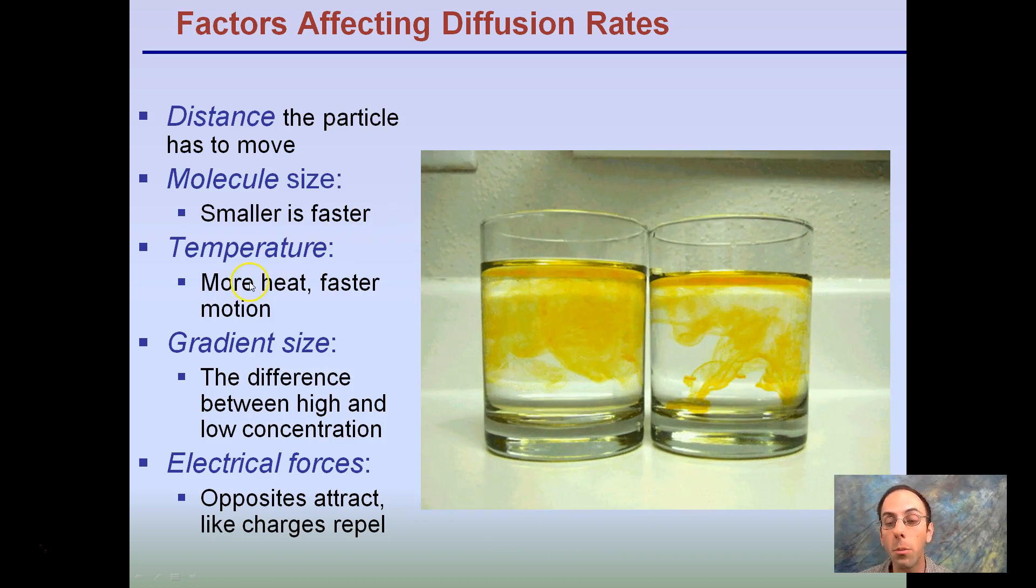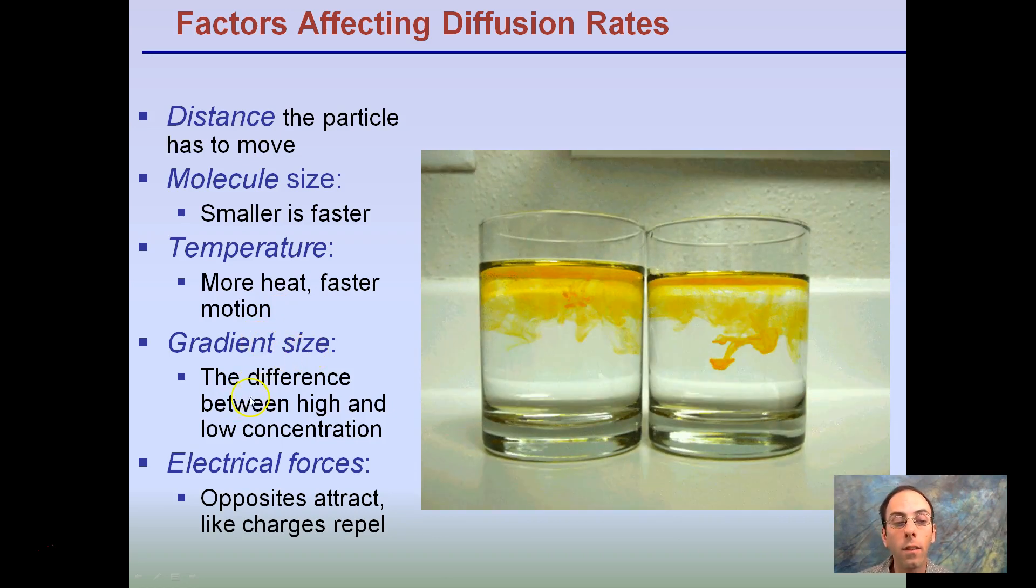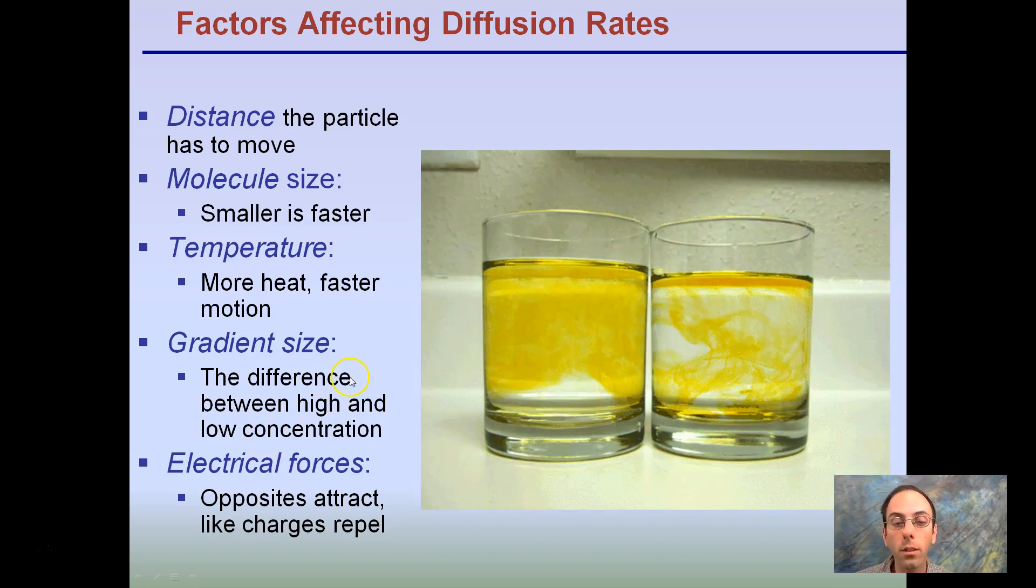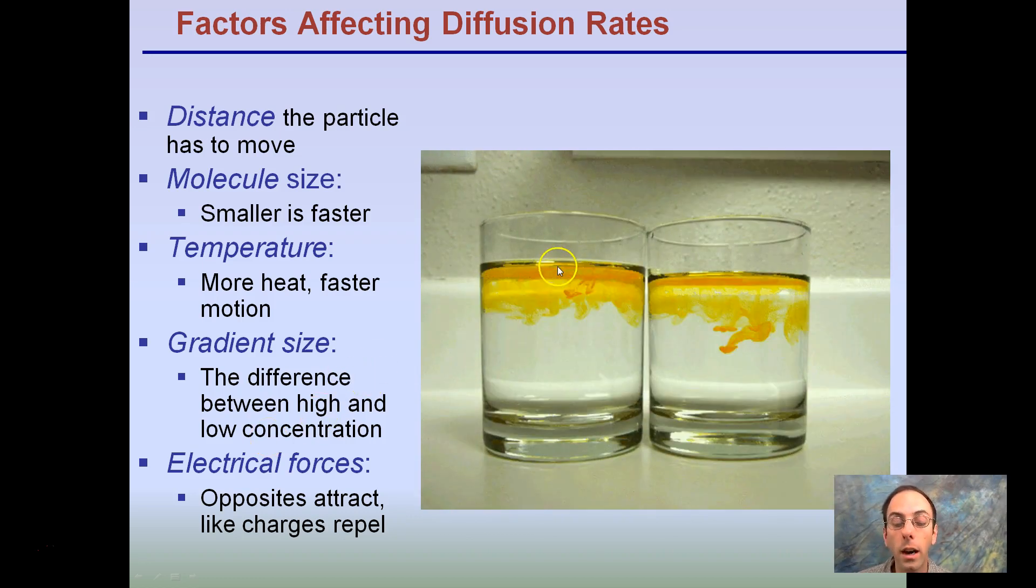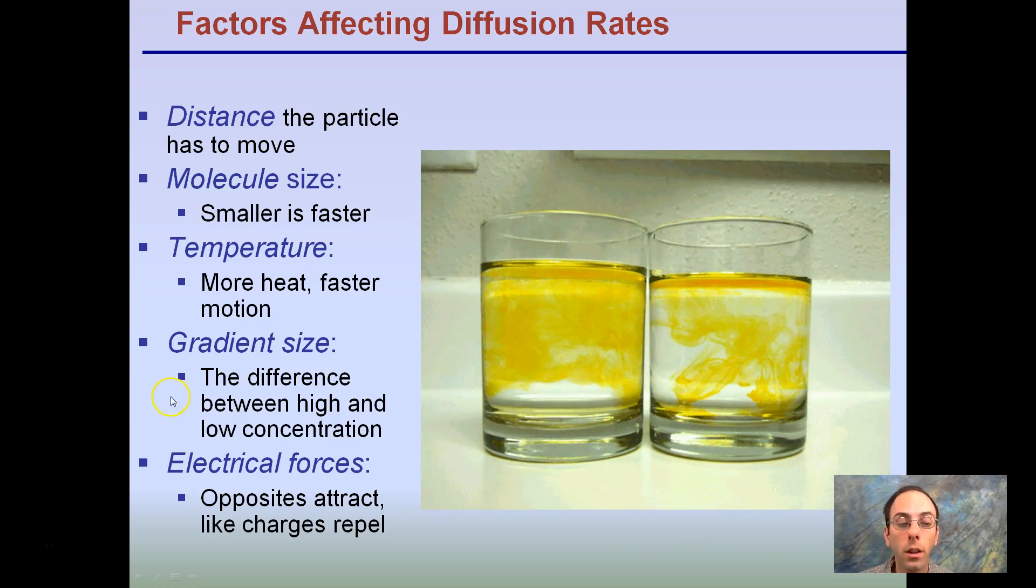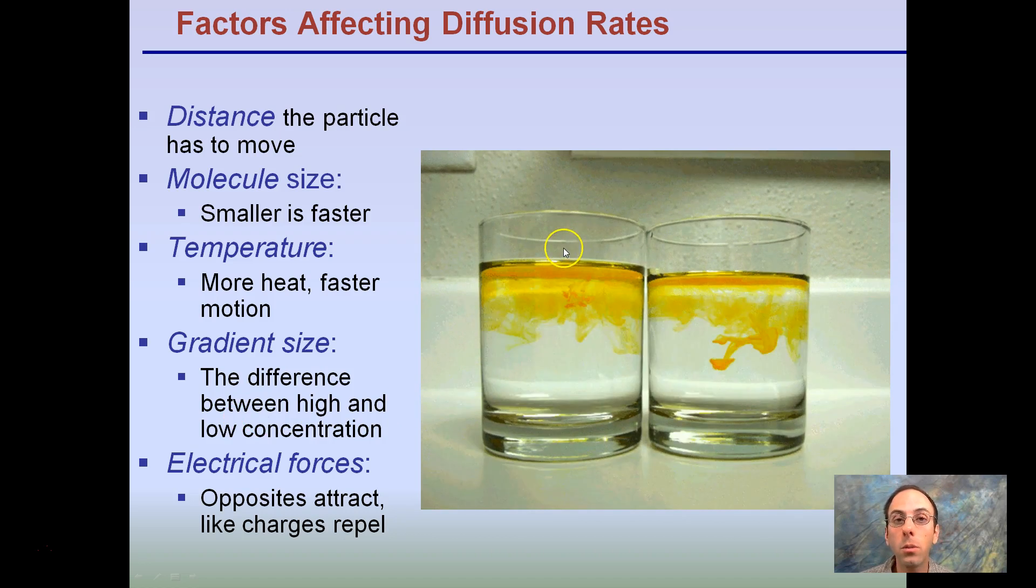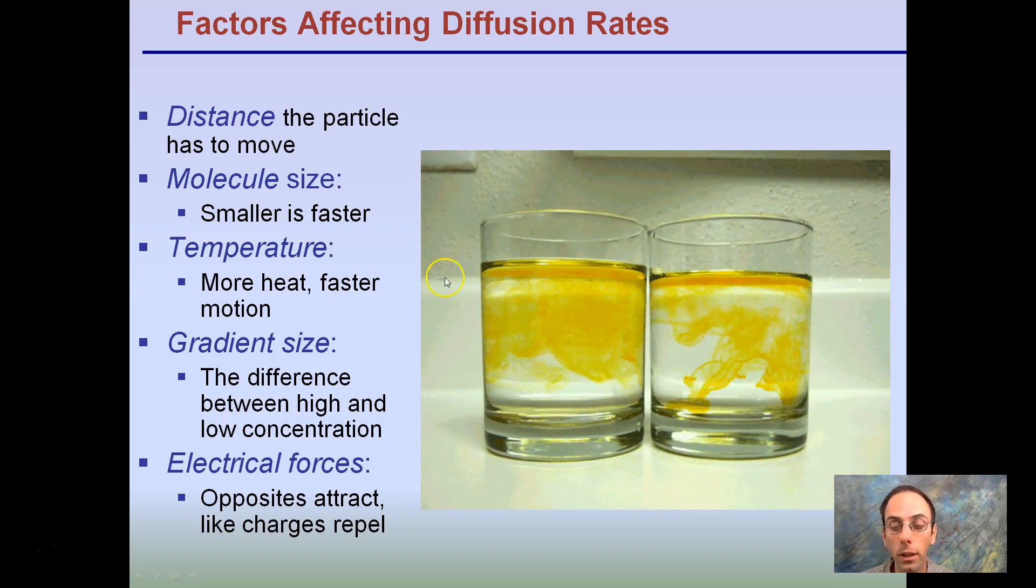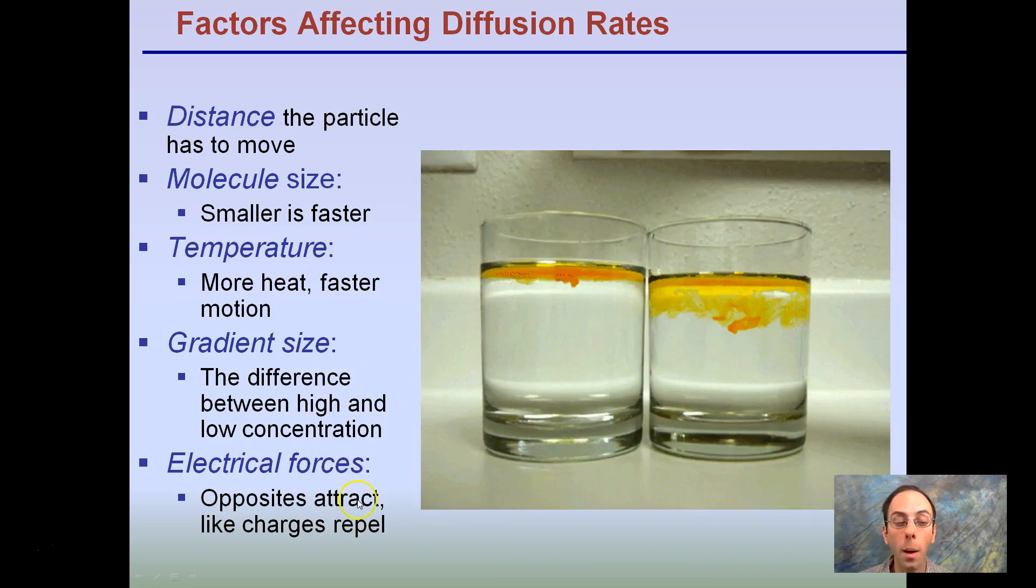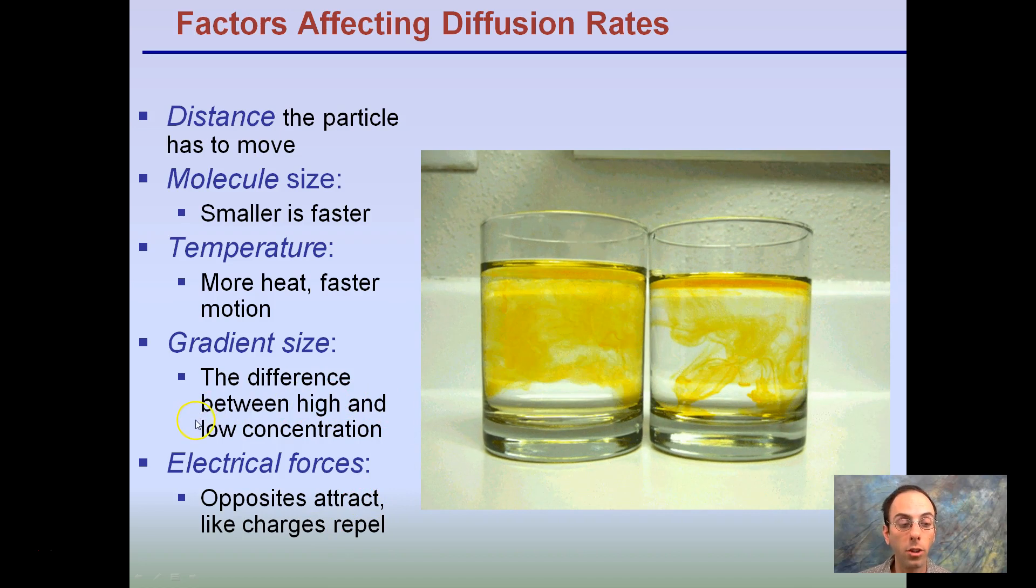Temperature. As we mentioned before, the more heat, the faster the motion. Gradient size: the difference between high and low concentrations. So, the greater the difference, in this case, the more concentrated the dye is, that's going to affect our diffusion rate. The difference between high and low concentrations. If it's very dilute, it's going to take a little bit longer for it to kind of work its way through. And electrical forces, opposites attract. Like charges repel if we're dealing with something that has positive and negative charges.